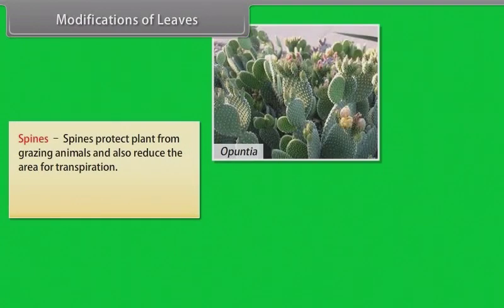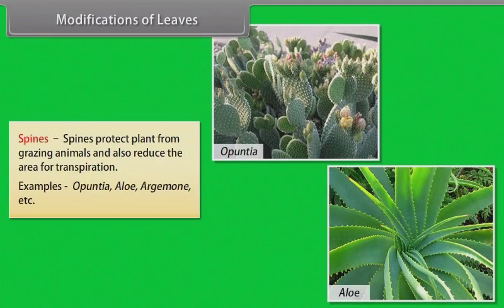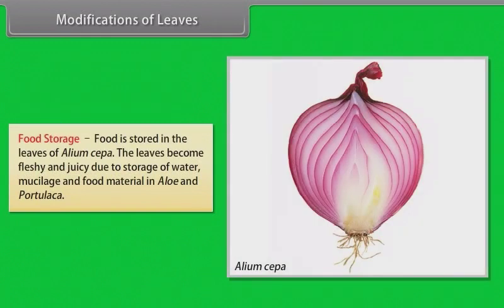Spines: spines protect the plant from grazing animals and also reduce the area of transpiration. Examples: Opuntia, Aloe, Argemone, etc. Food storage: food is stored in the leaves of Agave. The leaves become fleshy and juicy due to storage of water, mucilage and food material in Aloe and Portulaca.